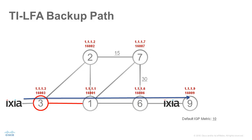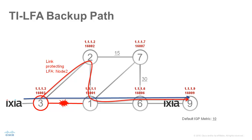This backup path follows the post-convergence path — the path that the traffic would follow after the link between node 3 and node 1 has failed. In this topology, node 3 can simply direct the traffic destined to node 9 towards node 2 when the link fails, and from there it follows the shortest path to its destination. This backup path is indicated by the red line. Note that this backup path is per-destination; each destination can have its own, possibly different, backup path.